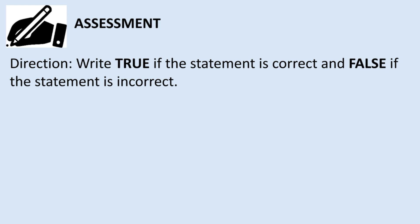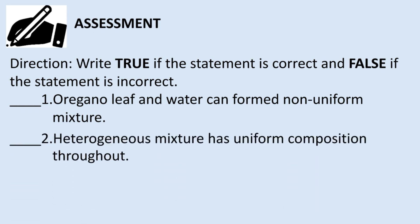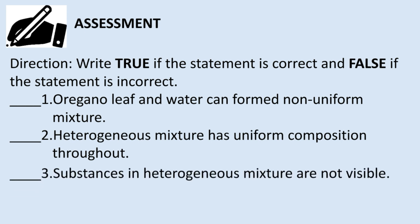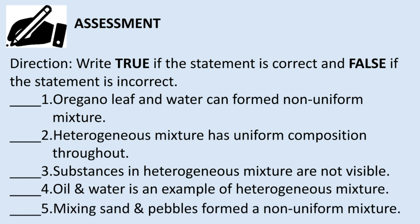Assessment. Direction: write true if the statement is correct and false if it is incorrect. One: oregano leaf and water can form a non-uniform mixture. Two: heterogeneous mixture has uniform composition throughout. Three: substances in a heterogeneous mixture are not visible. Four: oil and water is an example of a heterogeneous mixture. Five: mixing sand and pebbles forms a non-uniform mixture.